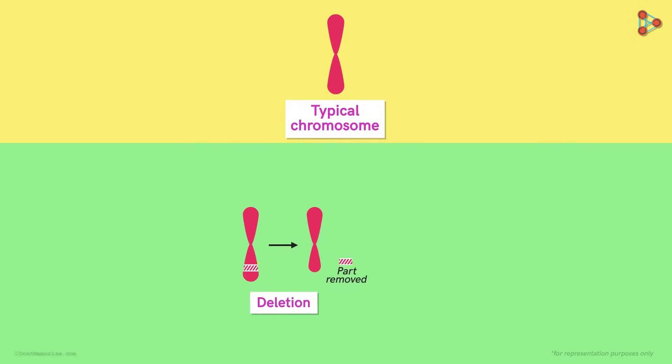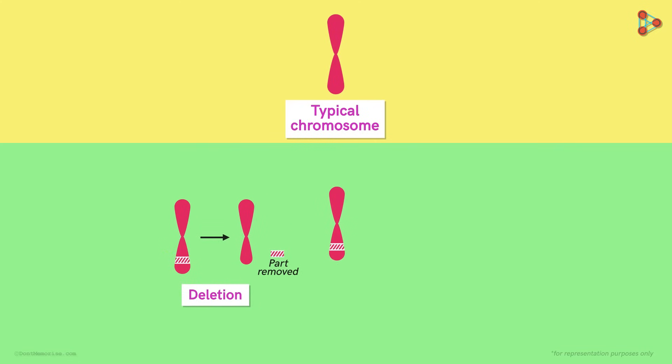Now imagine a part of the chromosome gets duplicated. As a result, the chromosome's length increases. This will also result in some abnormality in the individual. This type of mutation is called duplication.